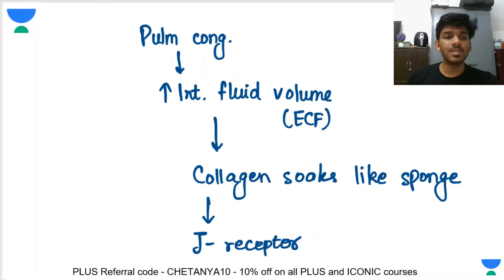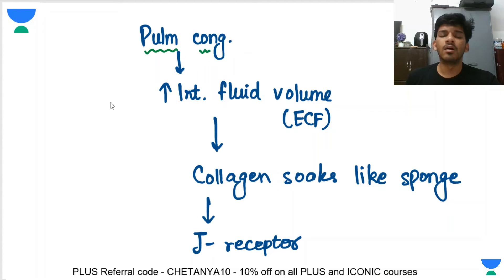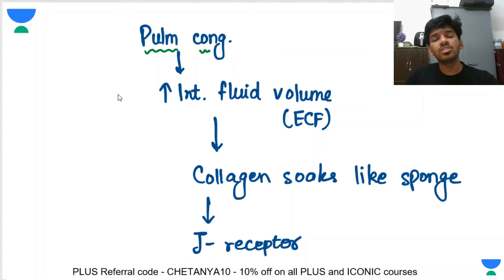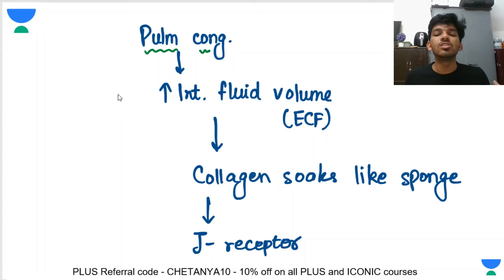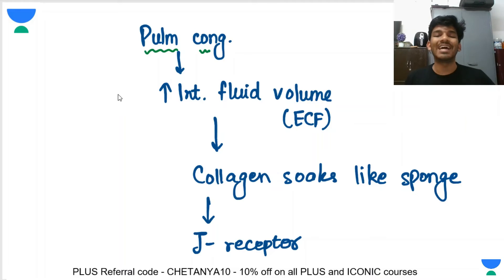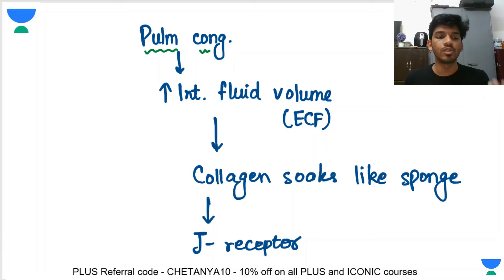This artificial stimulation is much stronger than normal physiological stimulation. The mechanism is that when there is pulmonary congestion, fluid moves out of the capillaries, increasing interstitial fluid volume — the ECF outside the capillaries. In the interstitial space you have collagen, and that collagen soaks water like a sponge. That collagen then stimulates the J receptors. This is the hypothesized mechanism of how J receptors work.